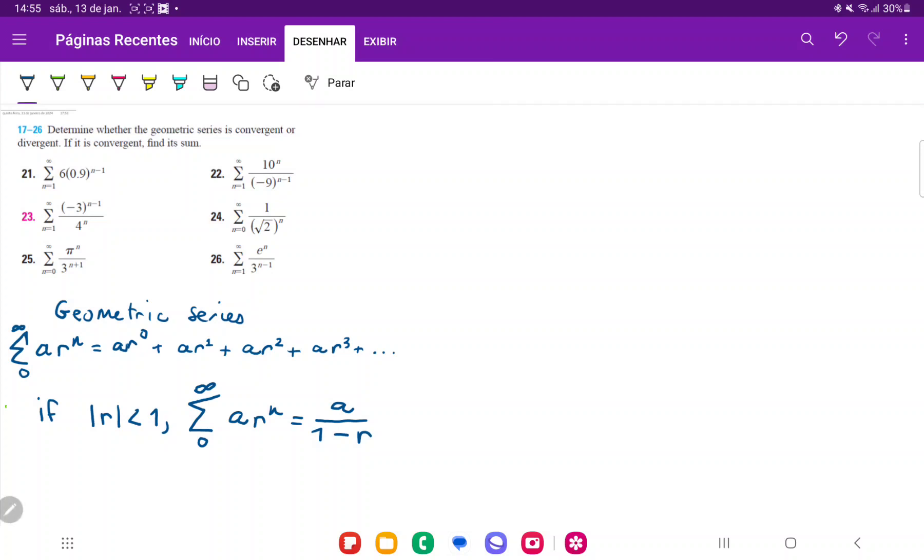So let's take 24. Problem 24 goes from 0 to infinity: 1 over square root of 2 to the power of n.